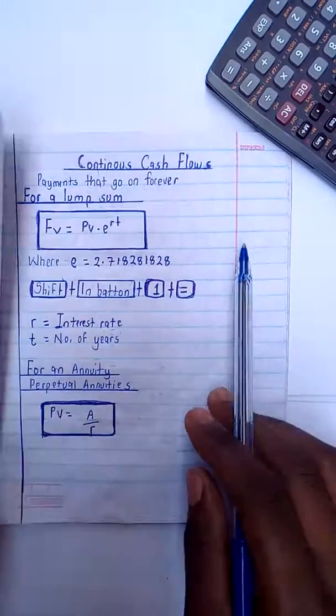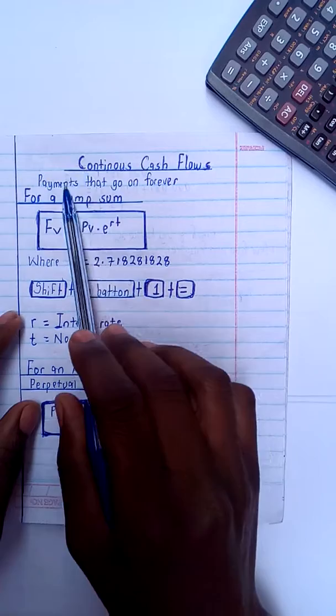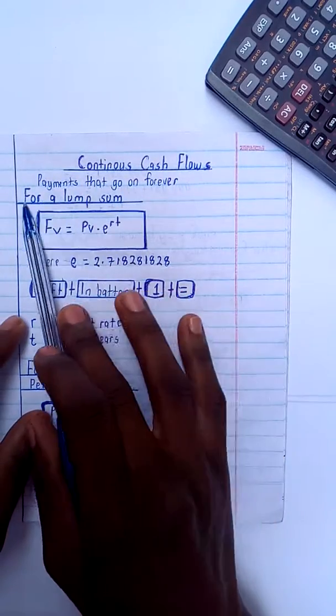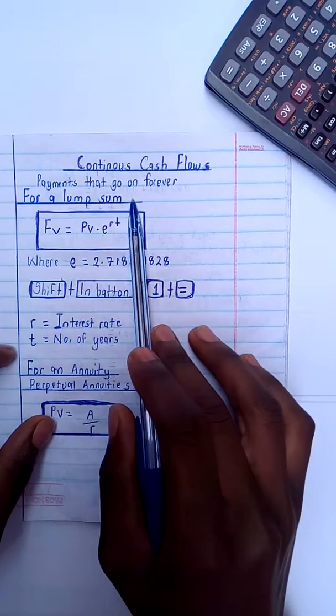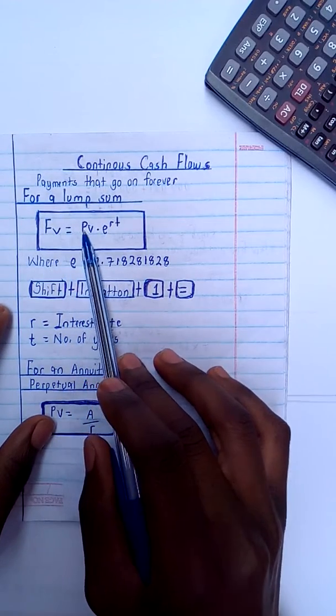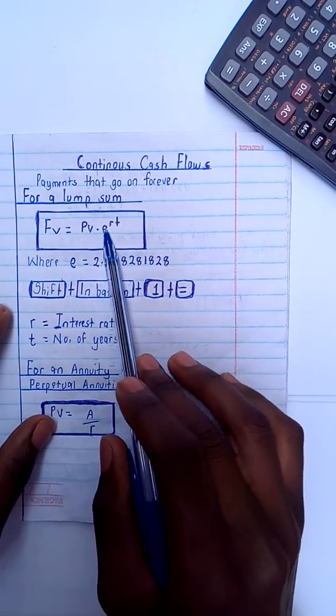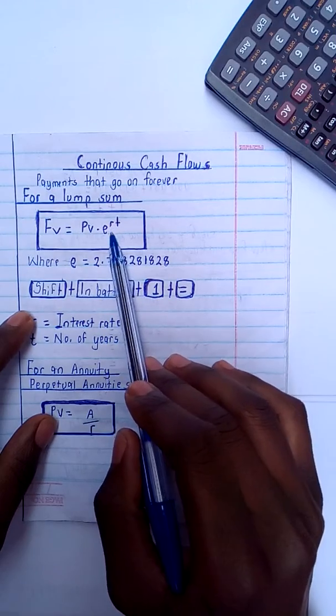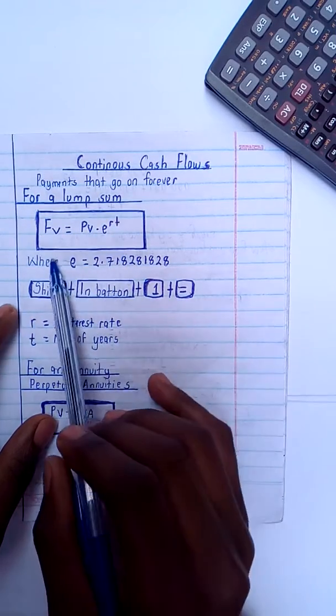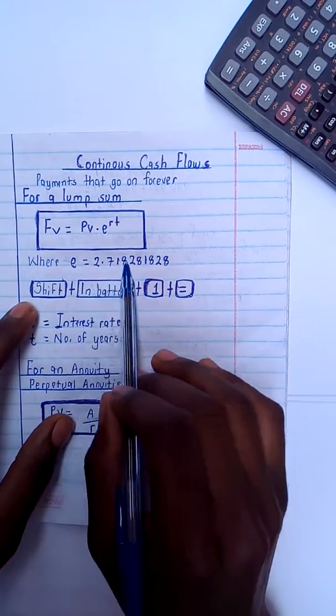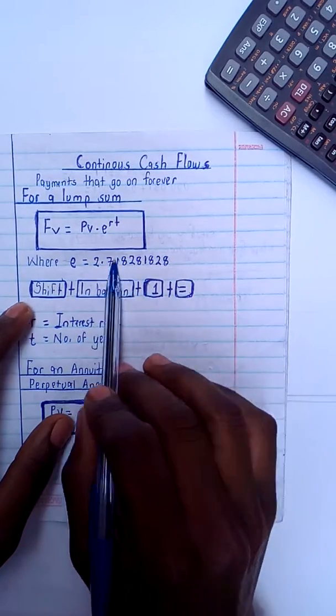Then looking at continuous cash flows, these are like payments that go on forever. For example, for a lump sum, the future value is equal to the present value times e to the power rt, whereby this e will be equal to this.